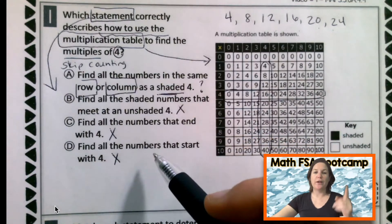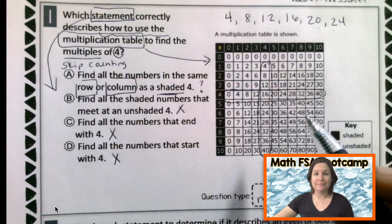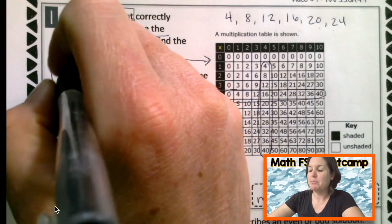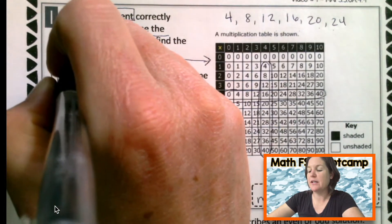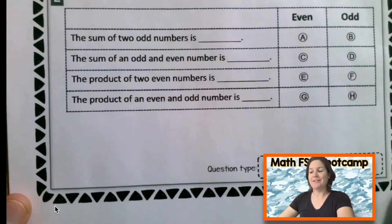So now that we've gone through each one, what is our final answer? A, right? Bubble it in. Don't spend your whole life doing it. Just make it a nice, dark bubble. Not sloppy, but nice. All right. Moving on to number two.